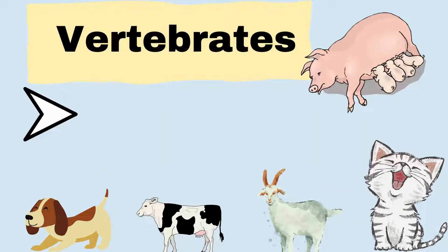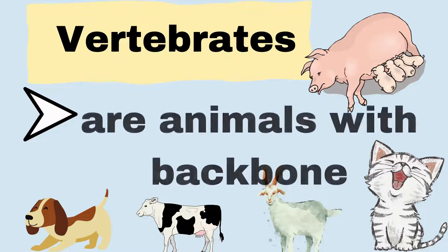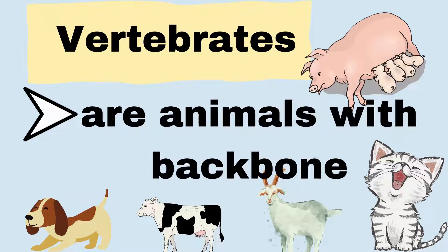Vertebrates are animals with backbones and have varying body parts used in walking, swimming, climbing, flying, and hopping. They also eat grass, meat, insects, and seeds as their food.